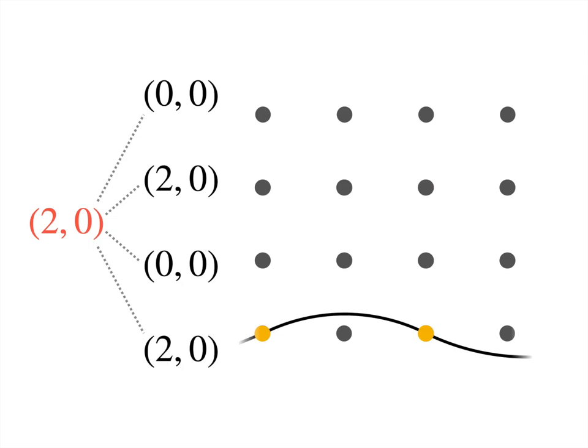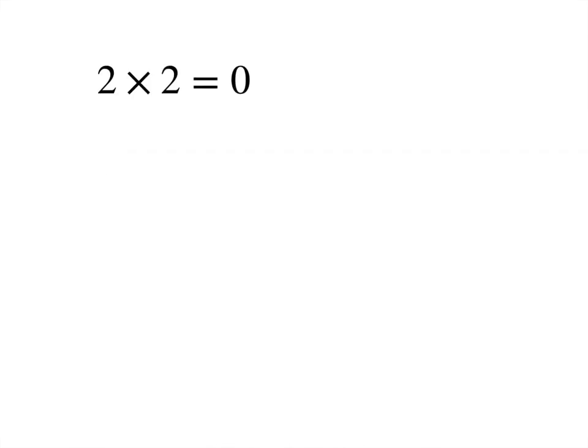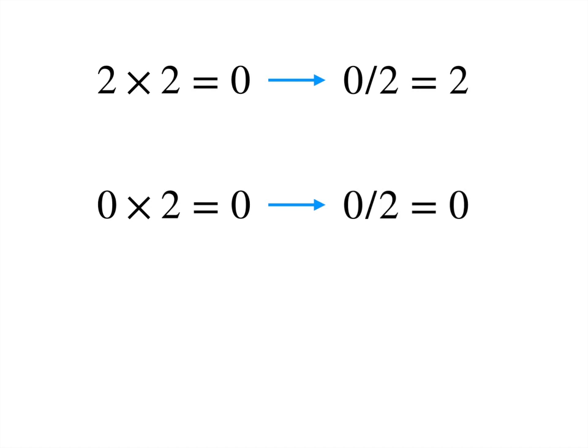It's not the same line as the one before. And this is a big problem because it violates our second rule. We suddenly have a pair of points with two different lines going through them. But it's actually even worse than that. If 2 times 2 is 0, then dividing by 2, 0 divided by 2 is 2. But of course, 0 times 2 is 0. So again, dividing by 2, I get 0 divided by 2 is 0. So 2 equals 0.